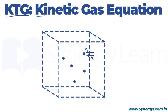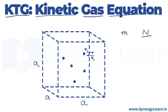In this video we will learn the derivation of the kinetic gas equation. We have a cubical container of edge length a, filled with gas molecules each having mass m and total number N. Due to temperature, the gas molecules move in random directions. Say a molecule moves with speed v in a particular direction — we can always split its velocity into x, y, and z components.